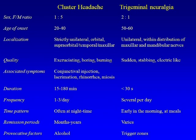Another important slide is differentiating trigeminal neuralgia from cluster headache, which comes up on boards. The differences are in pain quality and localization — V2/V3 distribution in trigeminal neuralgia versus V1 in cluster headache — and associated autonomic symptoms never occur in trigeminal neuralgia. Duration also differs: trigeminal neuralgia lasts seconds with an electric-shock quality, while cluster headache can last up to three hours.